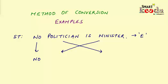The conclusion we'll get will be: 'No minister is politician.' You can see here that I am not drawing any Venn diagrams, because we used the Venn diagram method just to explain things earlier. Now we need to learn the faster approach with the help of which you will be able to solve a syllogism question in less than 15 seconds — and that's our ultimate goal.